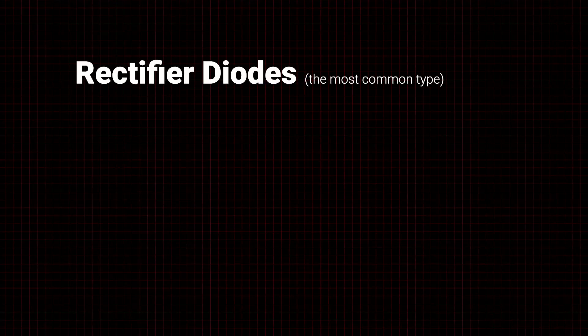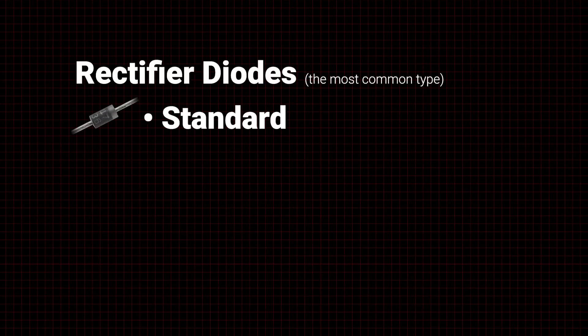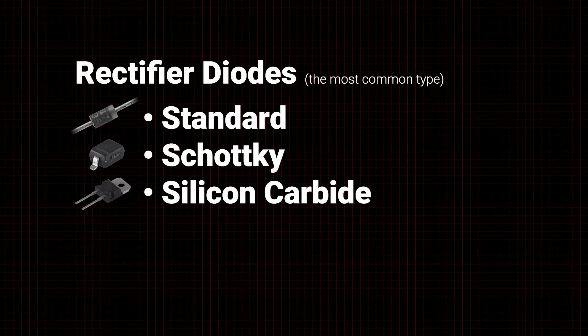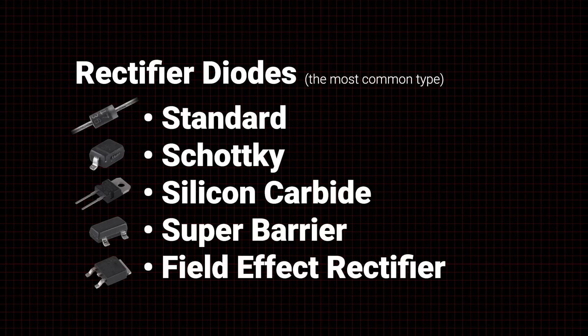Rectifier diodes are the most common types of diodes. These include standard, Schottky, silicon carbide, super barrier, and field effect rectifier diodes.